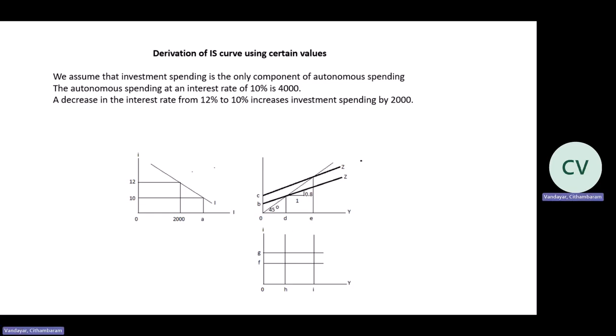At an interest rate of 10%, autonomous spending is 4,000 — that is given to us. So the value of C is 4,000. Now, a decrease in the interest rate from 12% to 10% increases investment spending by 2,000. By dropping your interest rates from 12% to 10%, your investments increase by 2,000. Therefore, by working backwards and subtracting 2,000 from the 4,000, you get the value for B, which is 2,000. And we know that C is 4,000 — which is 2,000 plus the 2,000, increasing the investment by 2,000 gives you 4,000.